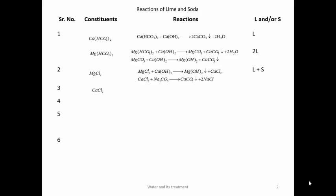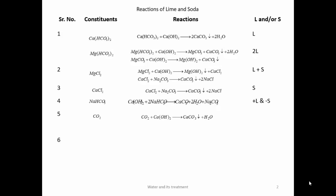Calcium chloride — must be converted to CaCO₃, so we add soda; requires 1 molecule of soda. Sodium bicarbonate — reacts with Ca(OH)₂ to give CaCO₃ plus soda; requires L − S (soda is produced as product). Carbon dioxide — requires 1 molecule of lime. H₂S — also requires 1 molecule of lime.